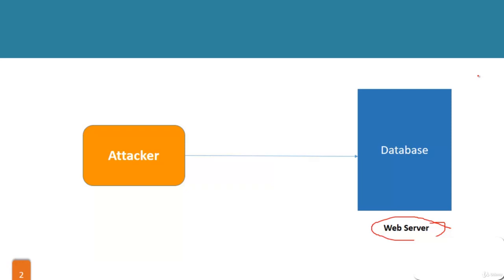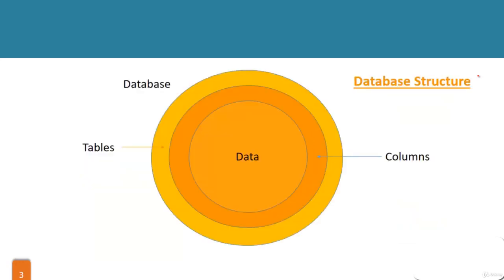SQL is used to communicate from the front end to the back end. If I have a website, I have the front end but I need to send SQL queries to communicate with the back end. If I ask a question to the back end in the form of SQL queries, it will give me an answer. That's what a database attack is — I want to send malicious content to the database, and if the database is not aware it's malicious, it will send me the information: mobile numbers, fax numbers, email IDs, addresses, customer names — everything stored in the database.